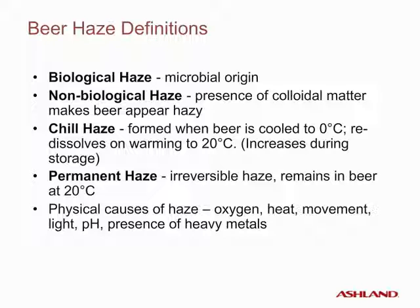Biological haze is primarily of microbial origin. Microbial haze will not be a part of this presentation; however, it is equally important as it has a direct impact on the quality of the beer. Non-biological haze is primarily caused by colloidal matter, which makes beer appear hazy. This haze can be seen with the naked eye on account of light scattering related to its size. Chill haze forms when beer is cooled to zero degrees Celsius and redissolves when beer is warmed. Permanent haze is irreversible, remaining visible even at room temperature, taken as 20 degrees Celsius.